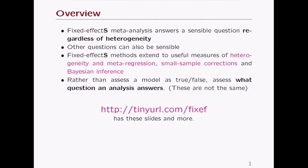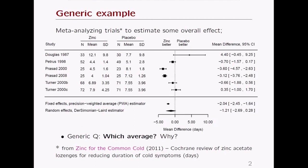Here is a generic example from a clinical trial: a forest plot of different effects comparing zinc to placebo in duration of the common cold — how many days until the cold went away. We have six studies with different sample sizes, standard deviations, and standard errors. Some are very precise, like the fourth one; some are very imprecise, like the first, which also has a point estimate quite far from the rest.